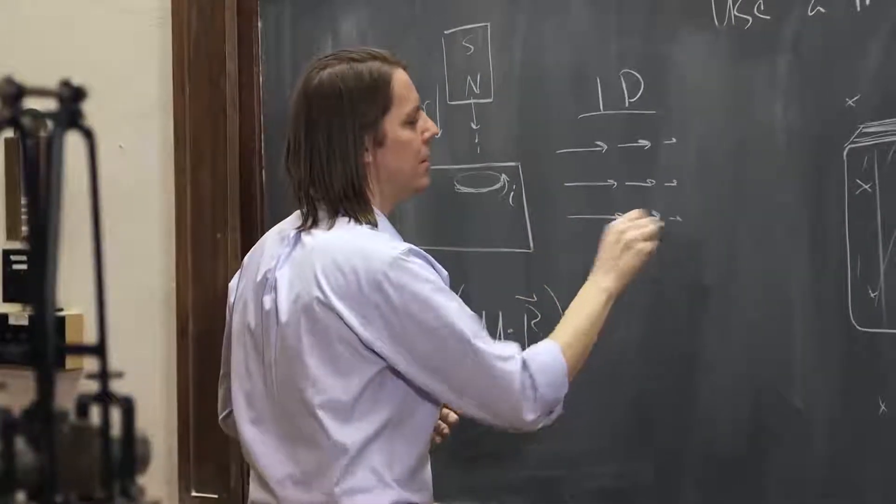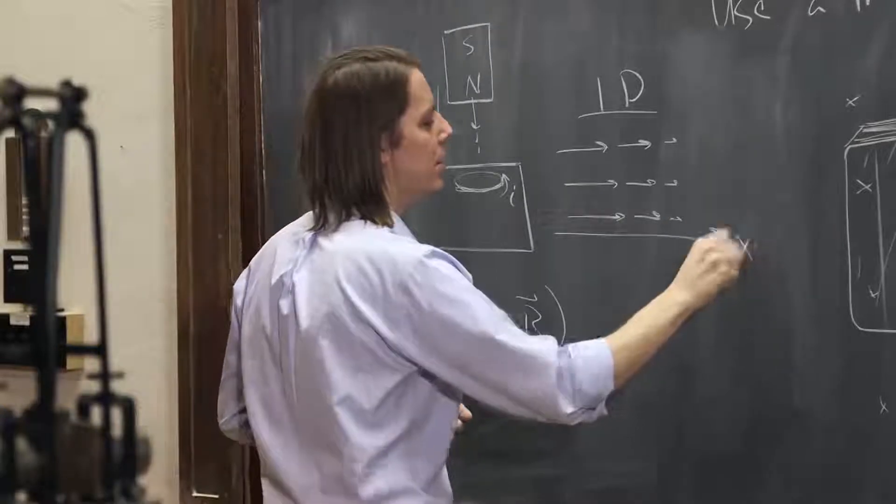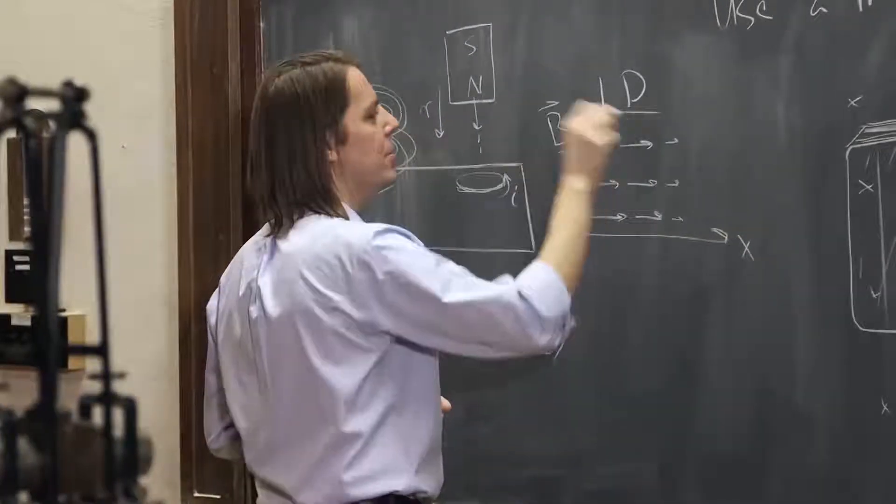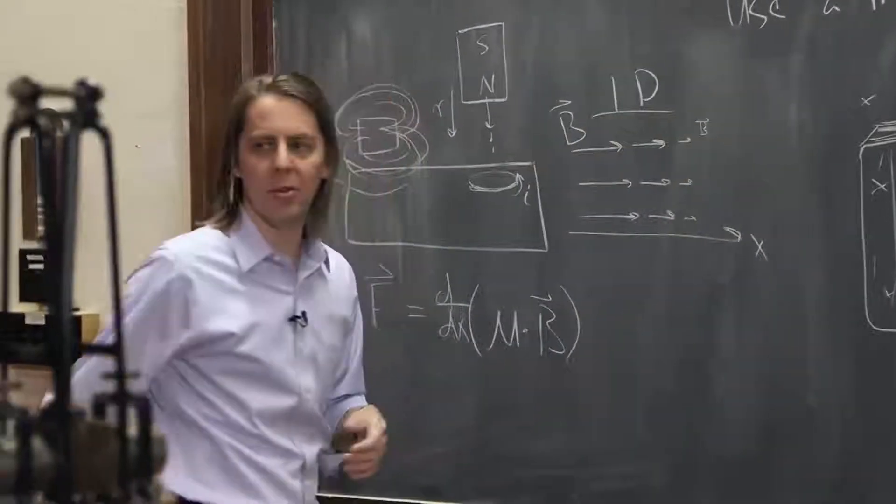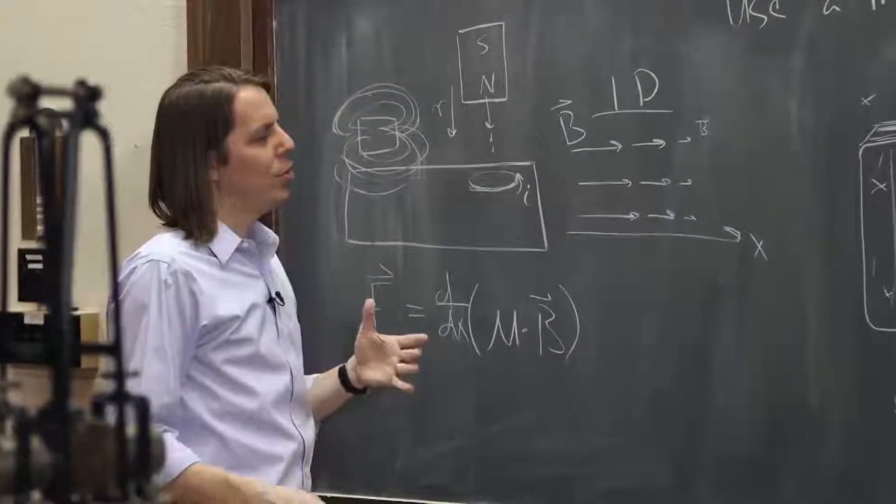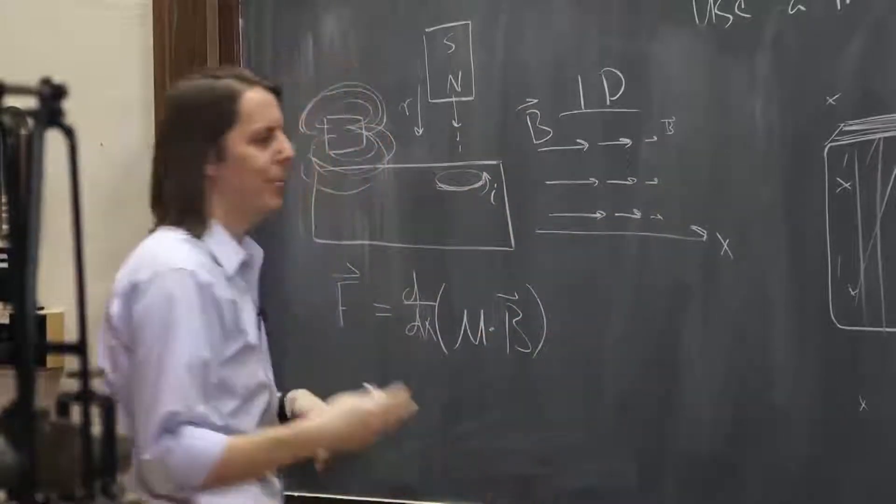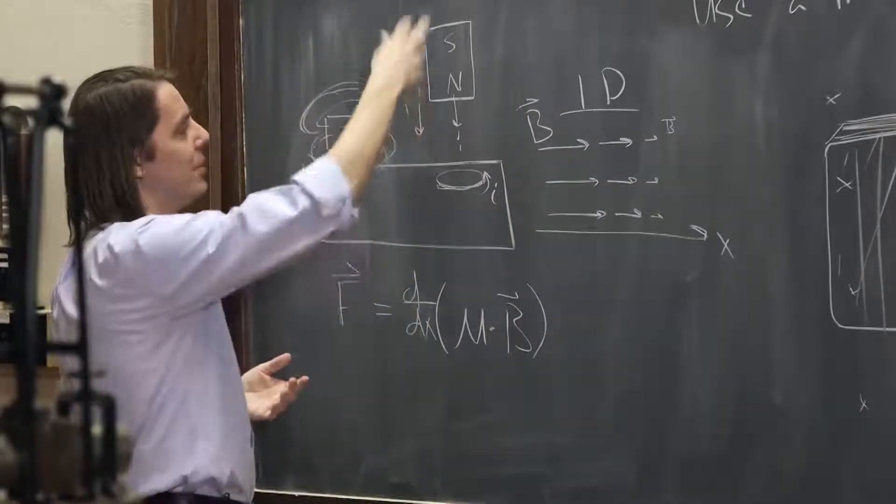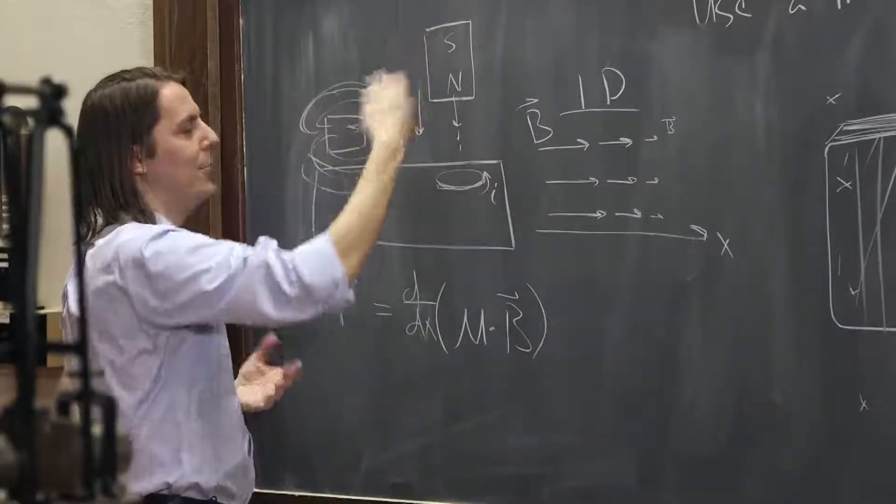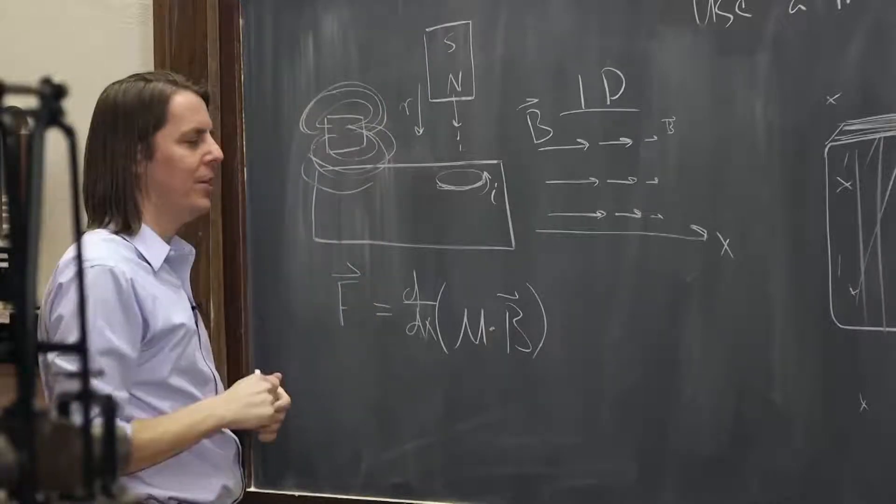Big B decreasing along the x-axis. So B is big here, B is small there. And now we want to know, what force does this field gradient create on a magnetic moment? A moment being, you could describe this as a magnetic moment. Any magnet, a current loop has a moment.